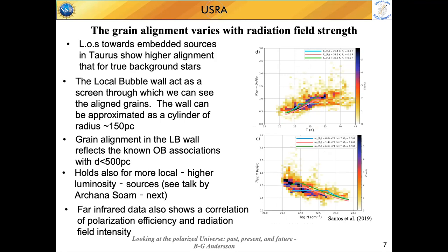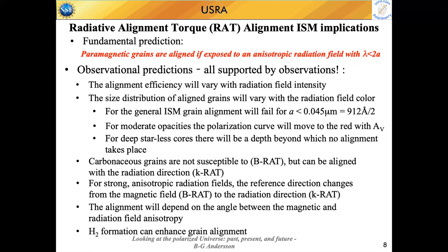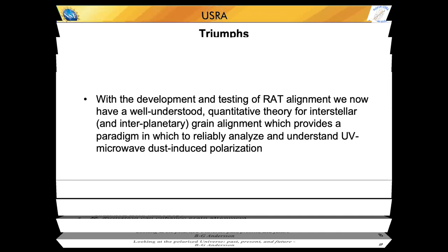The same correlation with intensity is also found in the far infrared. A plot from SOFIA HAWC+ data by Santos et al. also shows that alignment efficiency goes up with temperature and down with higher column density, in accordance with what Brandon was showing — the alignment efficiency drops as you go into clouds. I've only covered one experimental test, but we've done a number of tests on RAT. The RAT theory has the wonderful aspect that it sticks its neck out and offers challenges to disprove it, with specific predictions that could have been proven wrong, but so far haven't. RAT alignment is fairly well established.